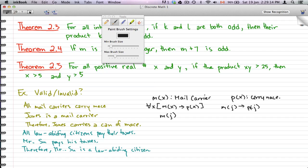Well Jones is a mail carrier, that implies Jones carry mace. So using MJ implies PJ and MJ, we find that PJ. Therefore Jones carries mace because he's a mail carrier. And this is a valid statement.